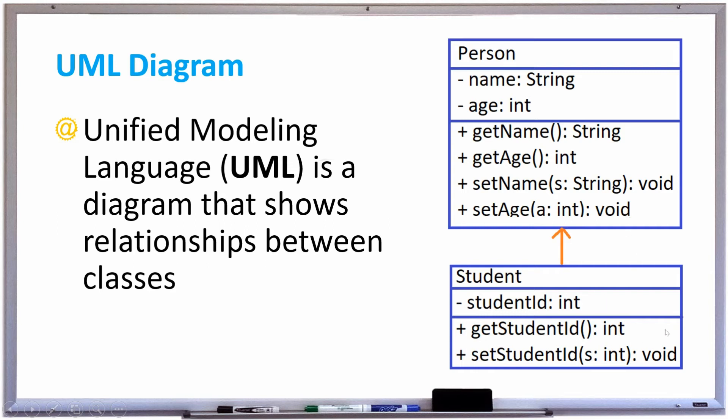Notice that this student UML diagram is pointing to person. That means student is a subclass of the class person. So student is a person. That's the relationship between student and person.